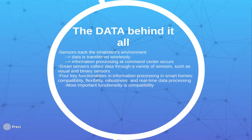The four key functionalities in smart home data processing are compatibility, flexibility, robustness, and real-time data processing. The most important of these is compatibility, because without it a smart home would not be able to process the data it collected — it would just be too complex. Therefore, the homes wouldn't pick up on human behavior and the whole smart home would be moot.